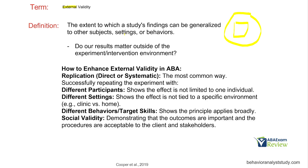How can we enhance external validity? Replication — repeat the experiment over and over again with different participants, different settings, different behaviors, different skills. Does it generalize? If it doesn't, then does it really matter? We're always looking for whether our results matter. We want to be effective, and effective means all results matter.